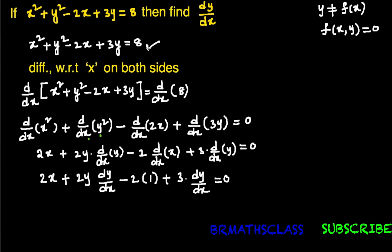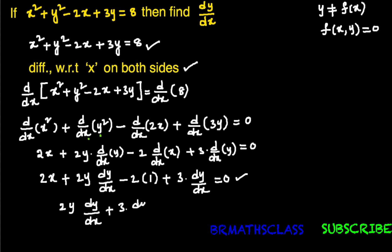Now that the differentiation is complete, we write all dy/dx terms on one side and all remaining terms on the other side. So we have: 2y·(dy/dx) + 3·(dy/dx) on the left-hand side.